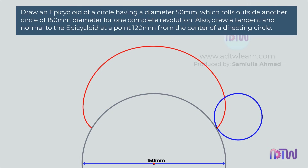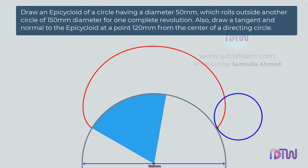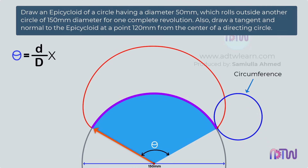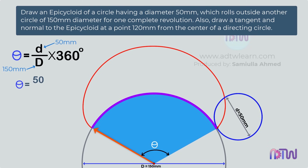In this question, it is given that the circle of 50 mm rolls outside another circle of 150 mm diameter for one complete revolution. If there is a point on this small circle, as the circle rolls, the path taken by this point is the required epicycloid which we have to draw. We also need to draw a tangent and a normal on this epicycloid at 120 mm from the center of the directing circle.